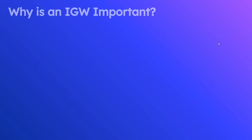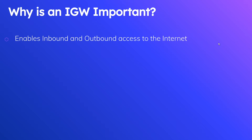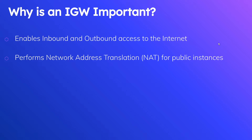So let's talk about why an internet gateway is important. First, it enables inbound and outbound access to the internet. Second, it performs network address translation for instances with a public IP address. Every instance has a private IP address, but to communicate with the internet you need a public IP address or an elastic IP address. The internet gateway is responsible for translating between those two. When an instance makes an outbound request, a public IP address is used, and that gets reverse-mapped to the private IP address when the response comes in.